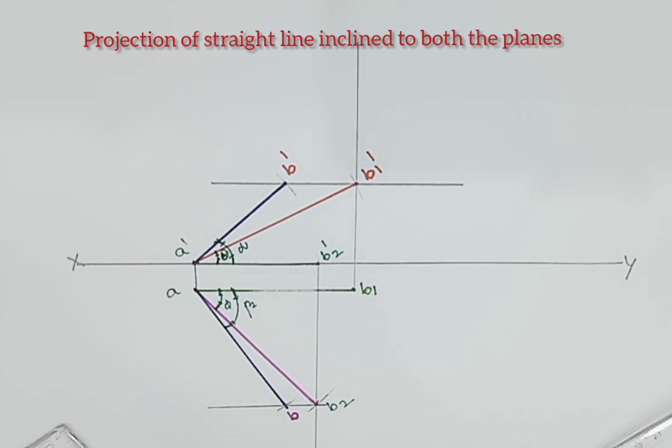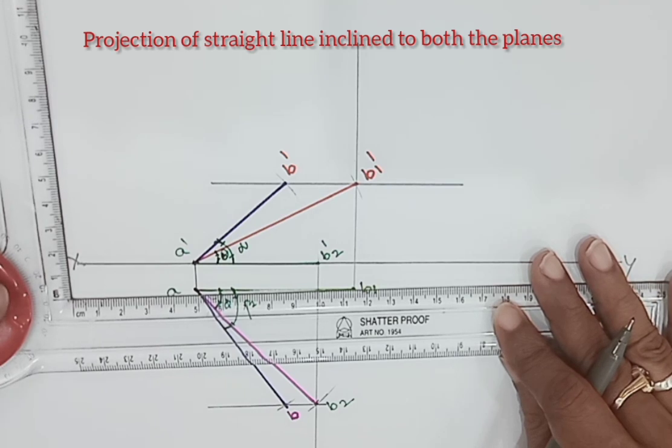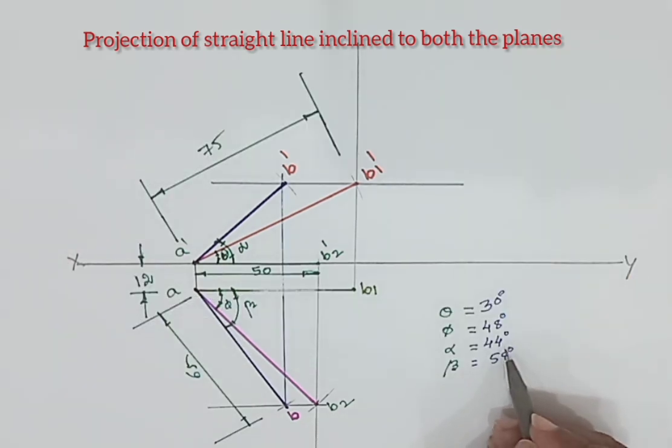Now we will do the dimensioning. Alpha value is 44 degrees, beta value is 58 degrees. This is the solution for the given problem.